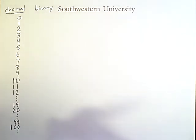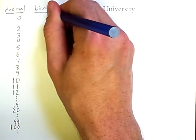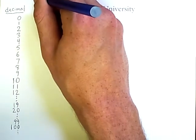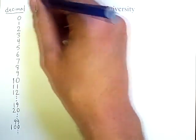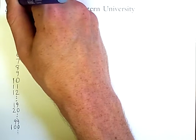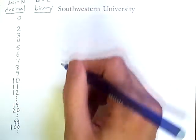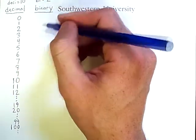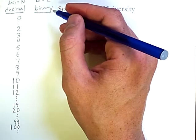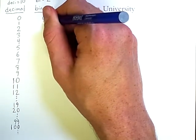Now, binary numbers count in a similar fashion, but are restricted to only 2 digits. The reason for that is that bi means 2, whereas deci means 10. So in a decimal number system, we have 10 available digits, and in a binary system, we have only 2 available digits. These digits are 0 and 1.